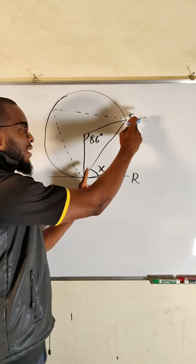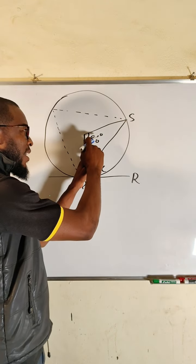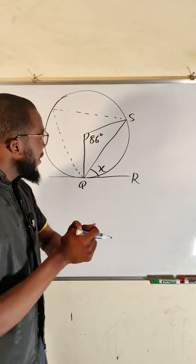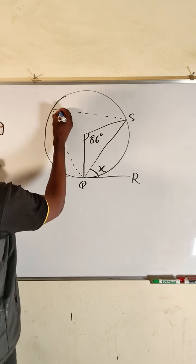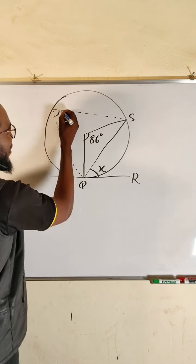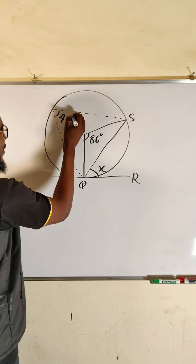...is twice the angle subtended to the circumference, right? So if that is the case, this particular angle will be half of this. And what is half of this? This is going to be 43 degrees, 43 degrees.